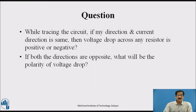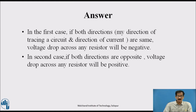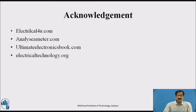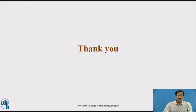Question: while tracing the circuit, if my direction and the current direction are the same, then the voltage drop across any resistance — is it positive or negative? Second question: if both directions, my tracing direction and the current direction, are the same, what will be the polarity of the voltage drop? Answer: in the first case, if both my direction and the current direction are the same, the voltage drop across any resistance will be negative. In the second case, if my direction and the current direction are opposite, the drop will be treated as positive. Acknowledgement. Thank you.